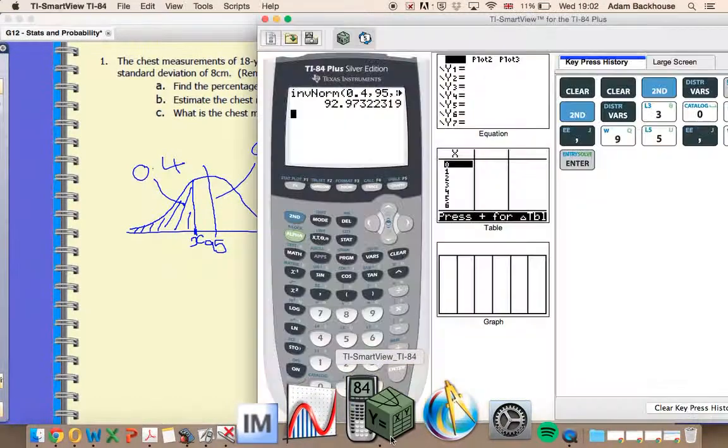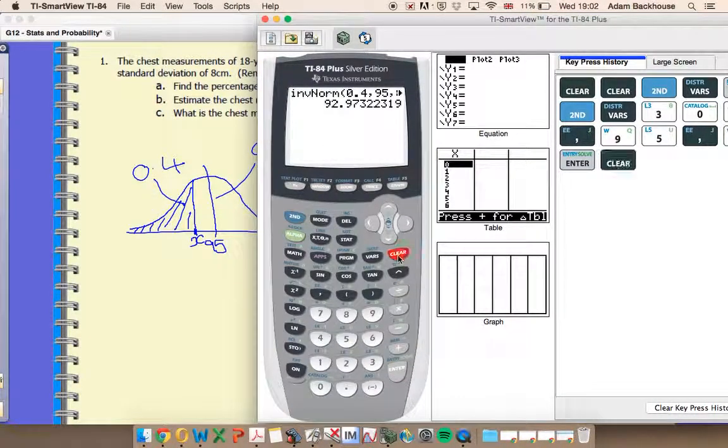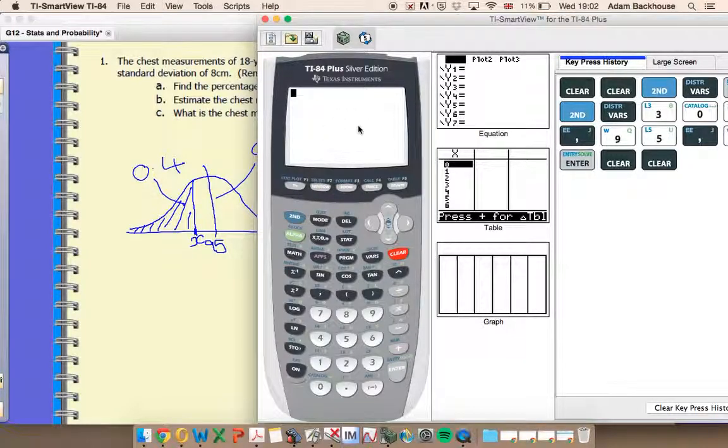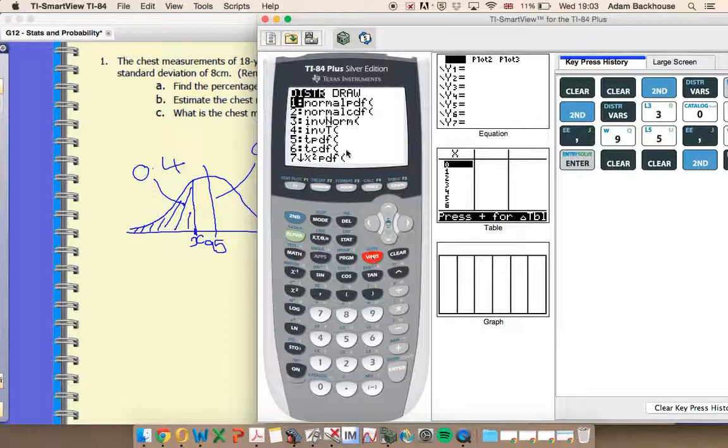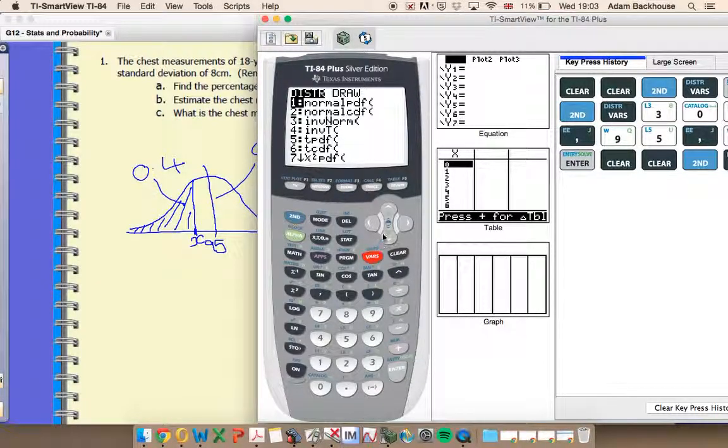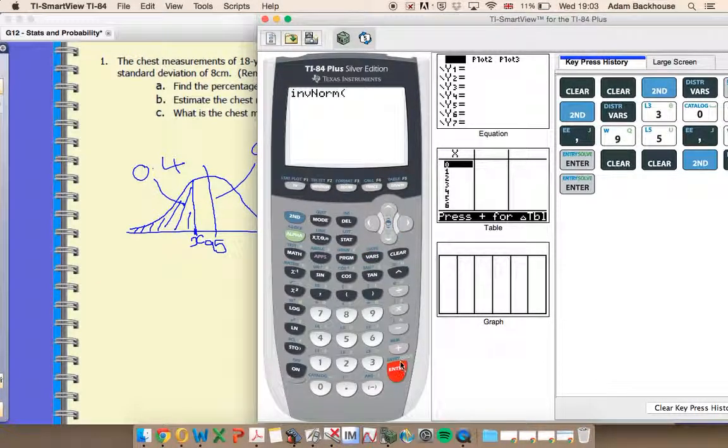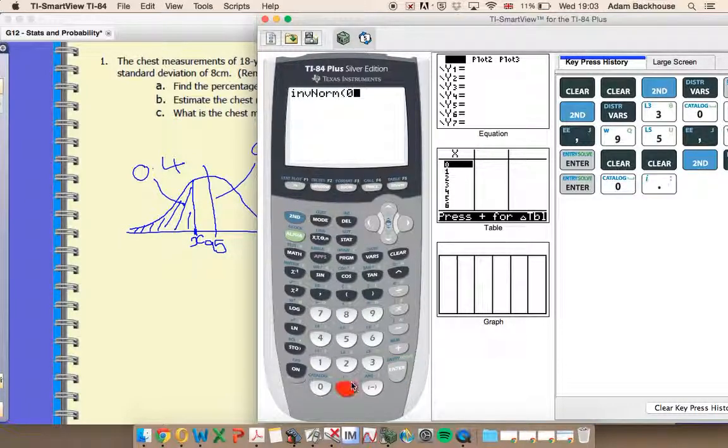Unfortunately, my calculator doesn't have the new operating system, so it's not quite as easy to use as yours. But we want the inverse normal. I'm doing this on my actual calculator at the same time. The first thing it says is the area, so that's the area we're looking at. This area always measures from the left, so I'm looking at 0.4. That's what I'd fill in on my screen.